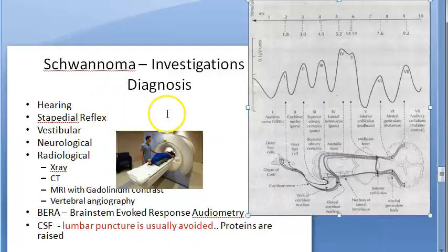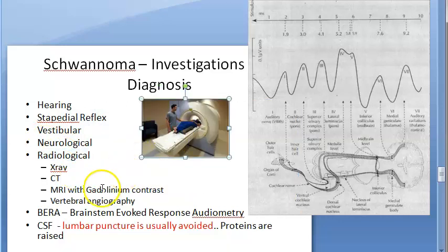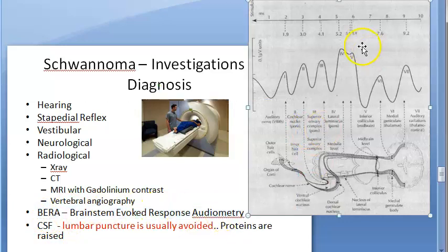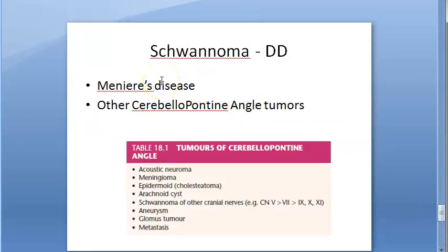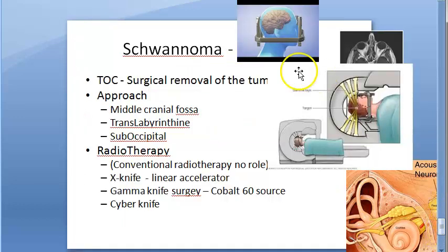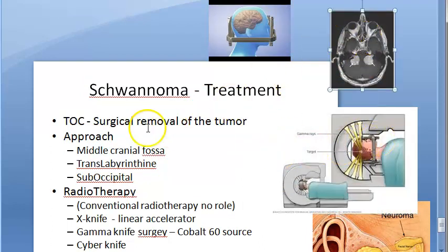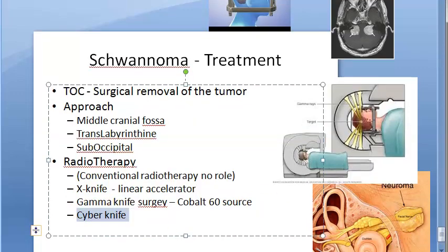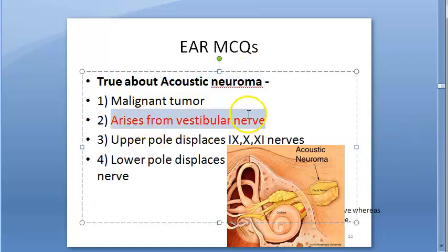Investigations include audiological tests, stapedial reflex, vestibular function tests, cranial nerve examination, X-ray, CT, MRI with gadolinium contrast, vertebral angiography, and BERA (fifth wave analysis). Lumbar puncture is avoided. Differential diagnosis: Meniere's disease and other CPA tumors. Treatment: surgical removal (middle cranial fossa, translabyrinthine, or suboccipital approach) or stereotactic radiotherapy (X-knife, Gamma knife, Cyber knife).